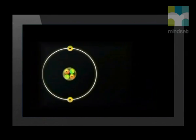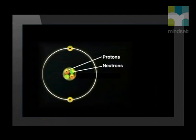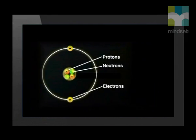This is a helium atom, represented by the Bohr model. It shows us that an atom consists of three subatomic particles called protons, neutrons and electrons. Protons are positively charged and have mass. Neutrons are neutral — they have no charge, but they have exactly the same mass as protons. A very strong force holds these two subatomic particles, the protons and the neutrons, together in the nucleus. The nucleus is in the centre of the atom.